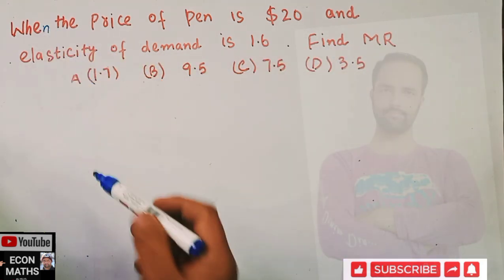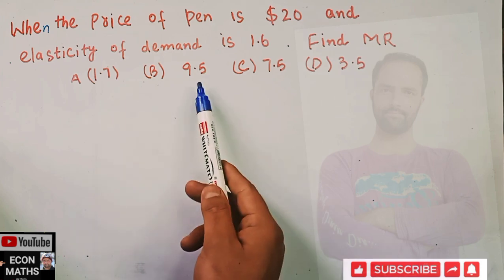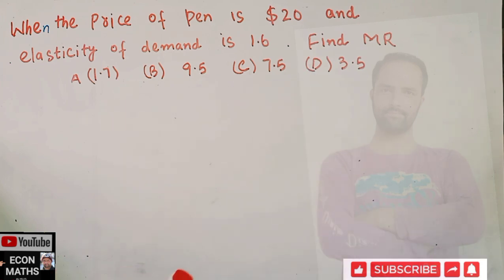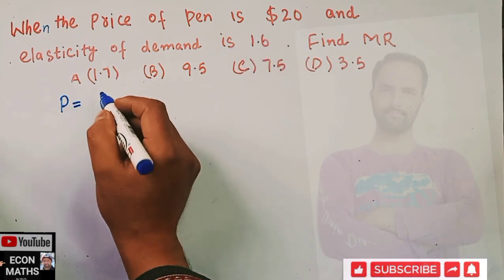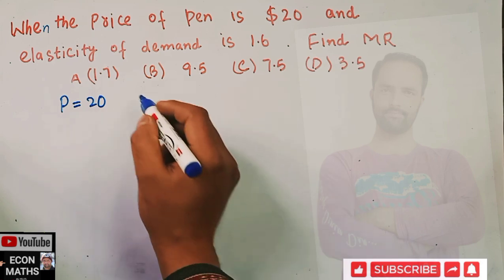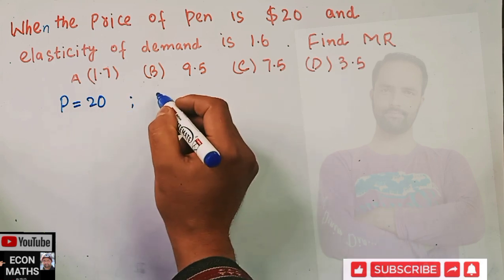We have to find the marginal revenue. The options are 1.7, 9.5, 7.5, or 3.5. What we are being given here is: price is equal to 20, and elasticity of demand, let me denote it by e, is 1.6. We have to find out marginal revenue.